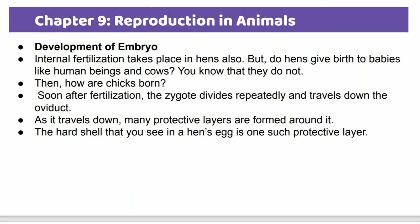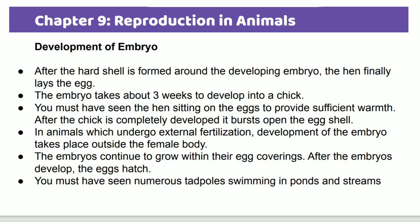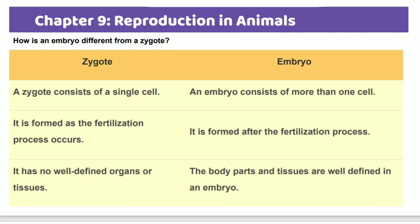In the case of the hen, internal fertilization takes place and the zygote divides repeatedly as it travels down the oviduct. A protective hard shell forms around it. Development takes place outside the female body. The embryo continues to grow within the egg covering until it hatches.